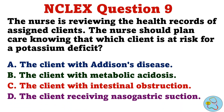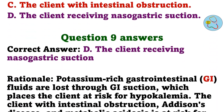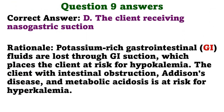Question 9. The nurse is reviewing the health records of assigned clients. The nurse should plan care knowing that which client is at risk for a potassium deficit? A. The client with Addison's disease. B. The client with metabolic acidosis. C. The client with intestinal obstruction. D. The client receiving nasogastric suction. The correct answer is D. The client receiving nasogastric suction. Rationale. Potassium-rich gastrointestinal fluids are lost through GI suction, which places the client at risk for hypokalemia. The client with intestinal obstruction, Addison's disease, and metabolic acidosis is at risk for hyperkalemia.